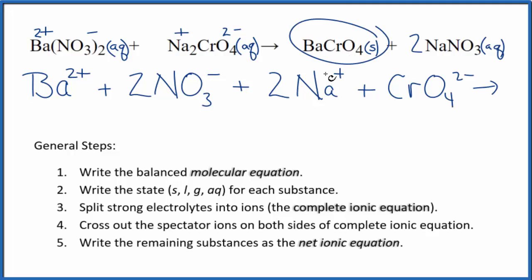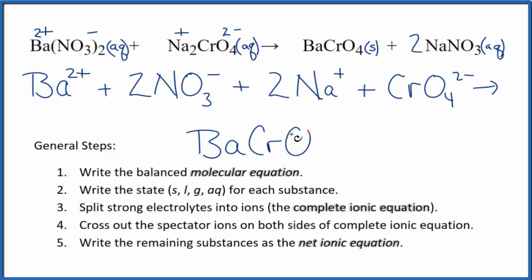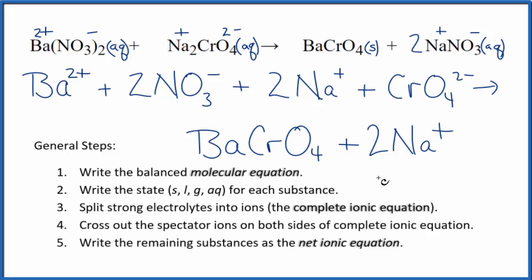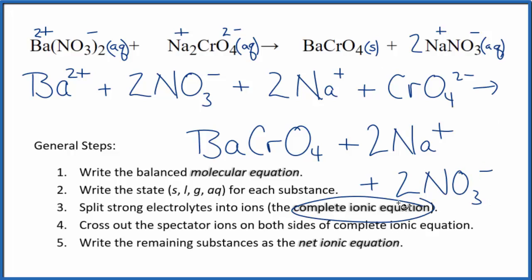For the products, we don't split solids up in net ionic equations, so we keep barium chromate together. Then we have sodium and nitrate: two sodium ions, Na⁺, and two nitrate ions as well. This is what we call the complete ionic equation.